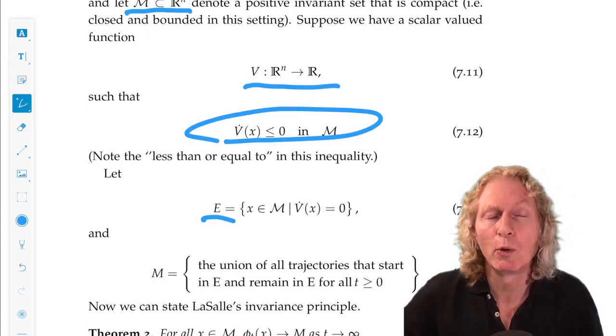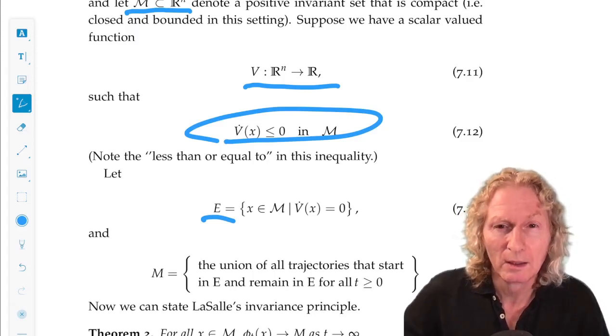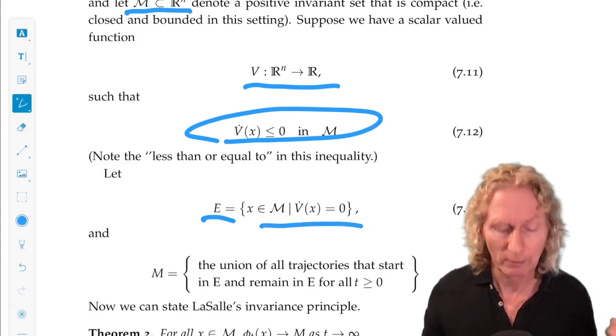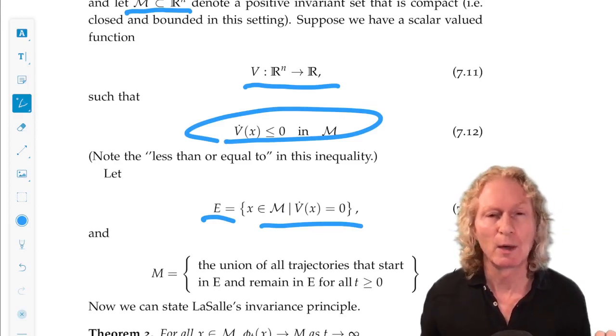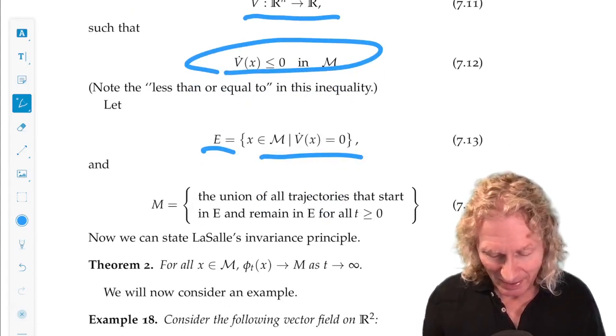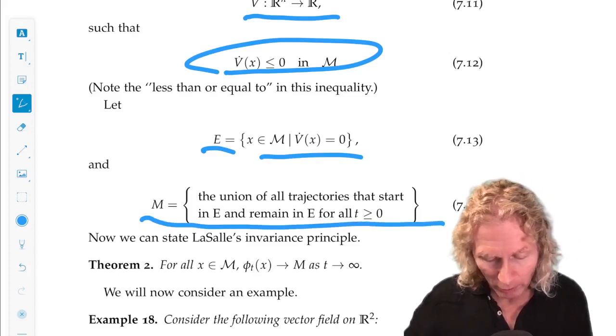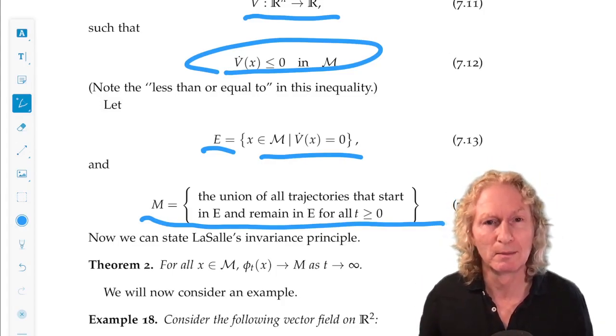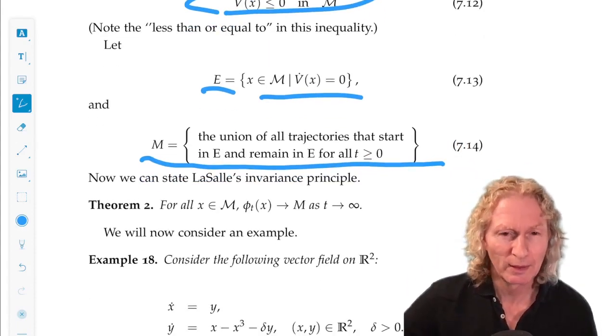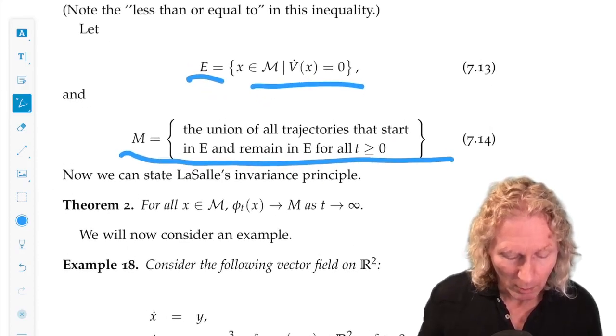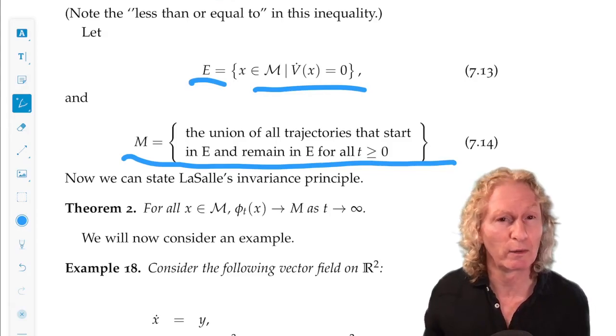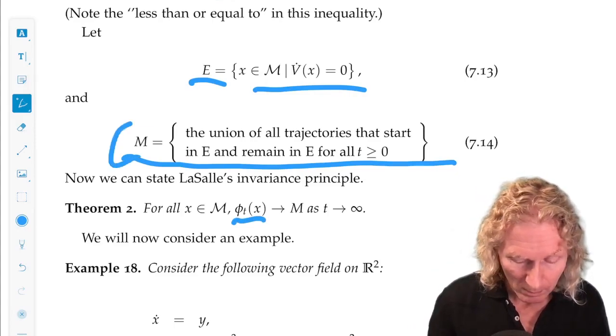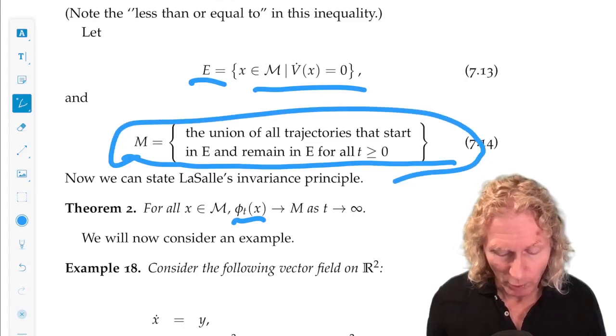Calligraphic M is a positive invariant set. E is a set of points in this positive invariant set where V̇ is actually zero. And then the last set, uppercase Roman M, is the union of all trajectories that start in E and remain in E for all positive time. Now we can state the LaSalle invariance principle. Theorem 2: For all points in calligraphic M, the trajectory through that point approaches this set M as t → ∞.